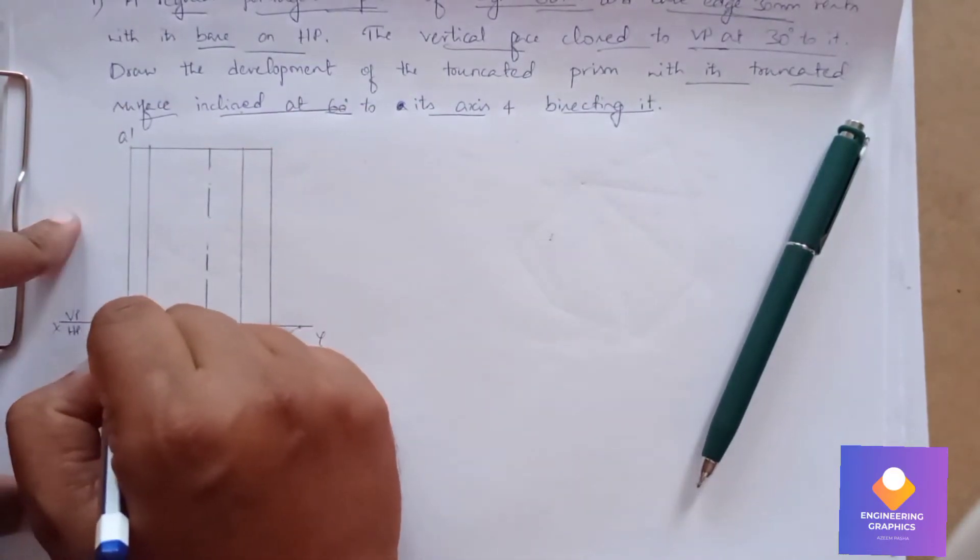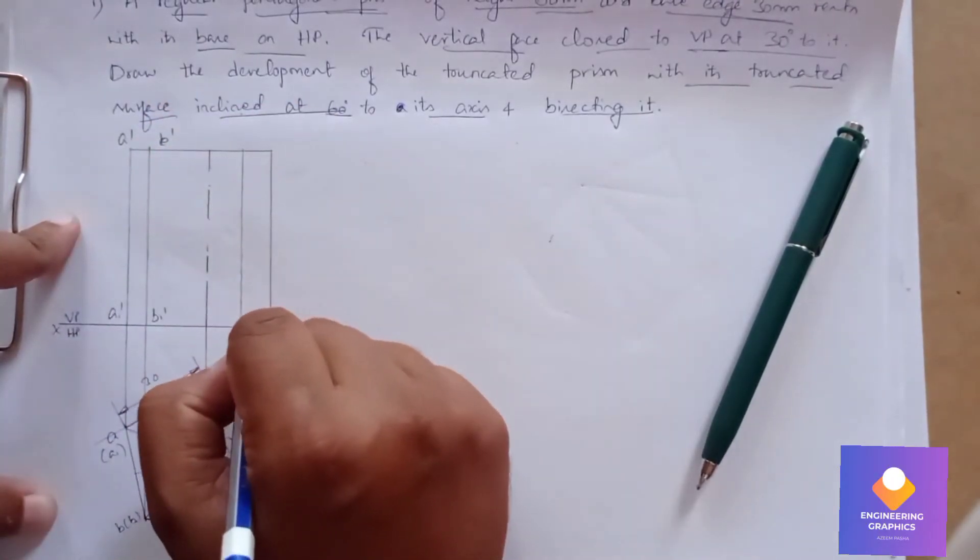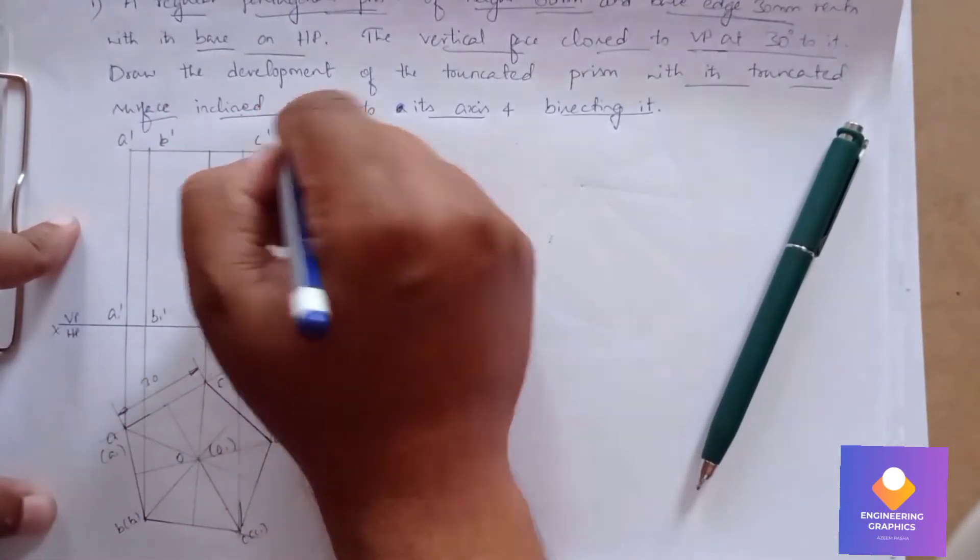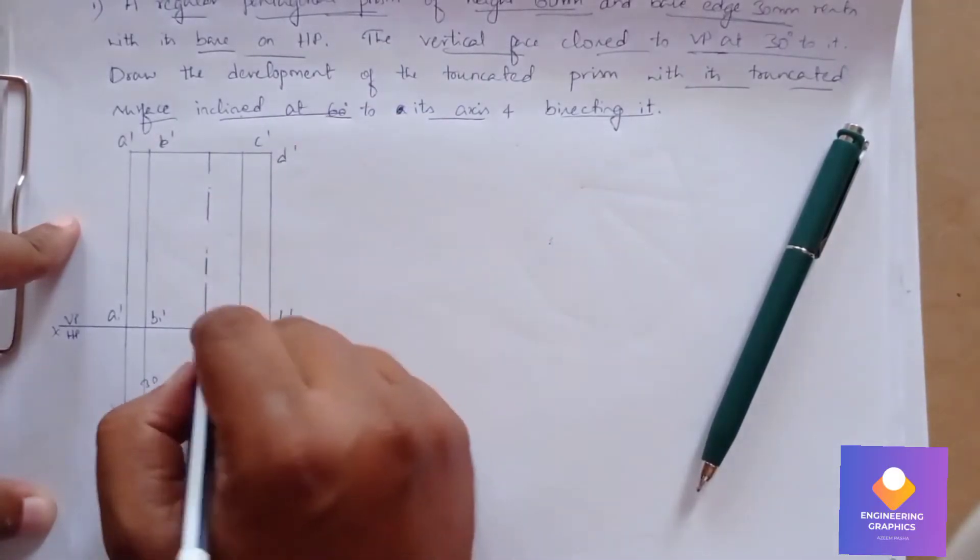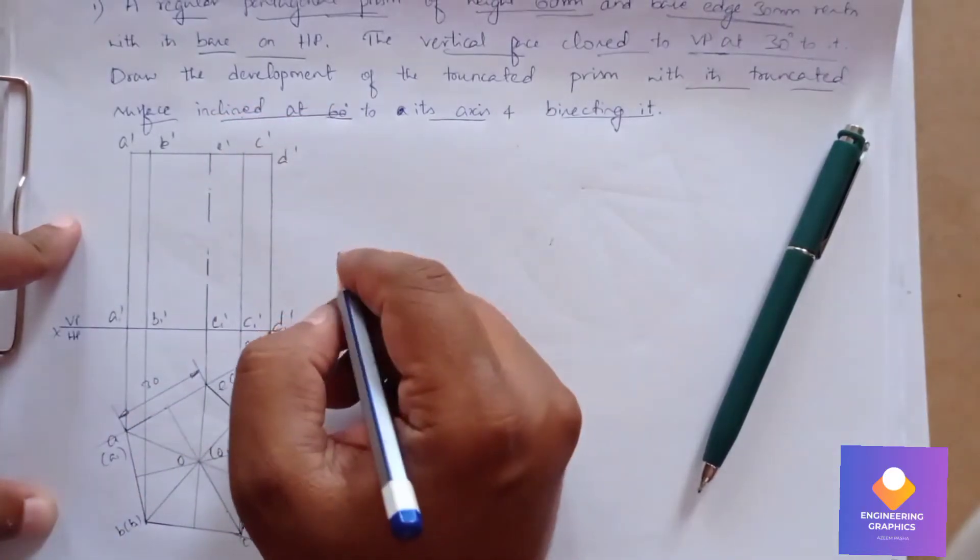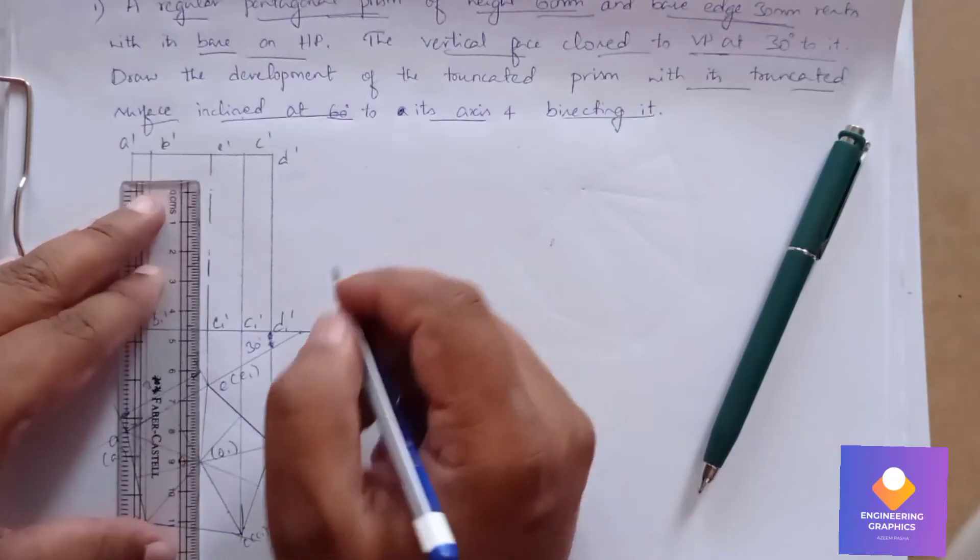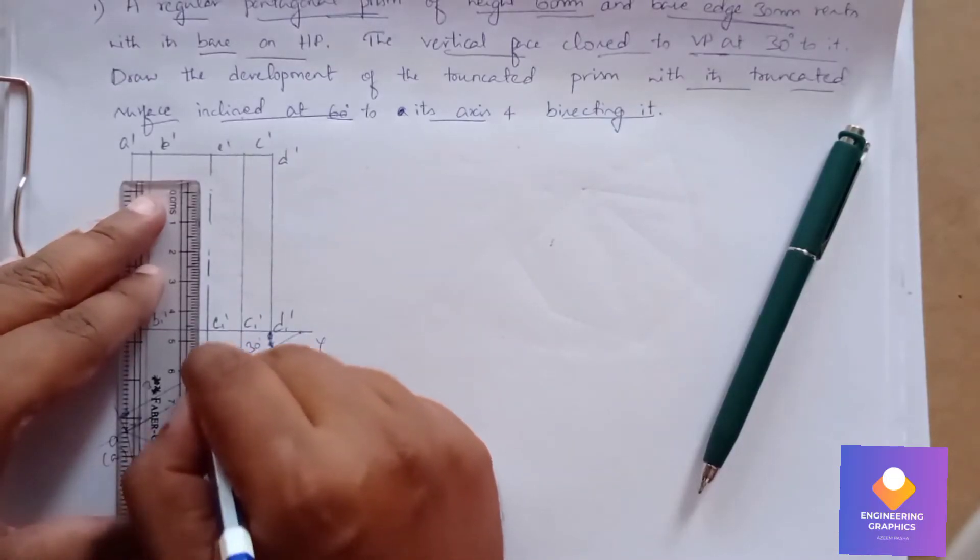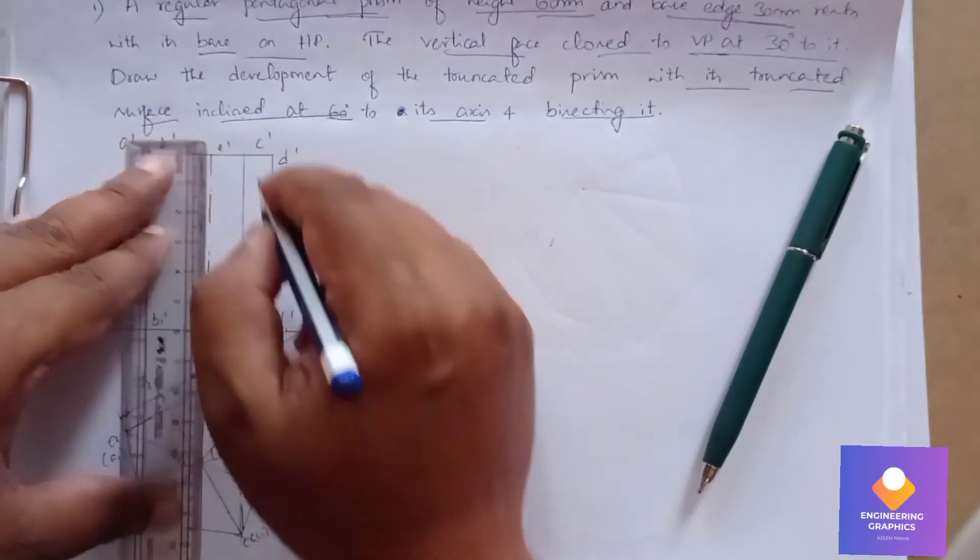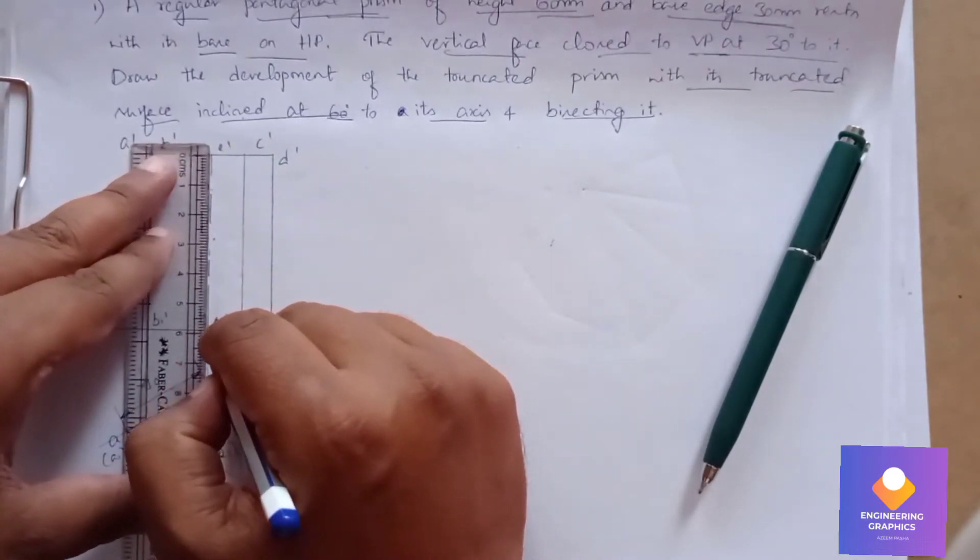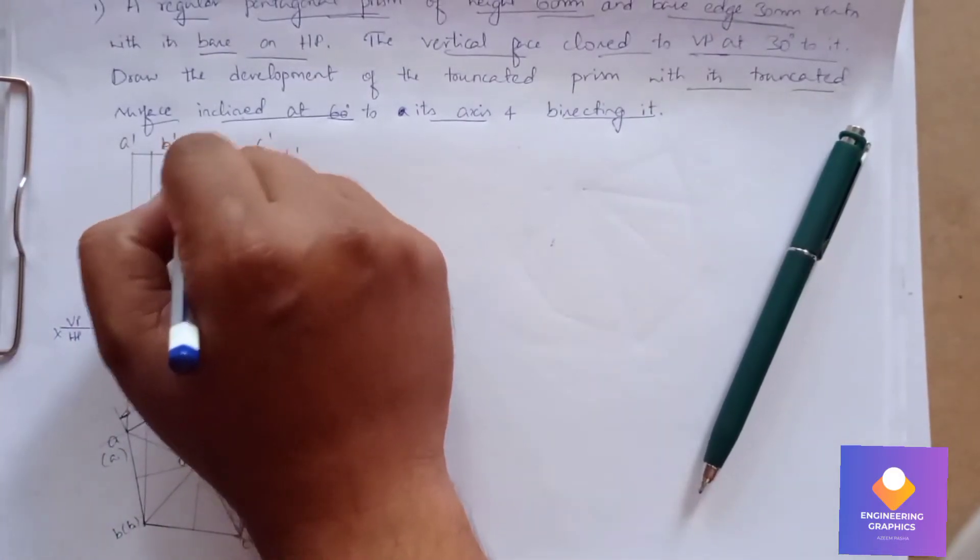You can mention the naming for the top face and bottom face. Here exactly an axis point I am missing, the axis line. That is your edge point E1 dash. We will mark that. Now we are getting exactly O1 dash and O dash.